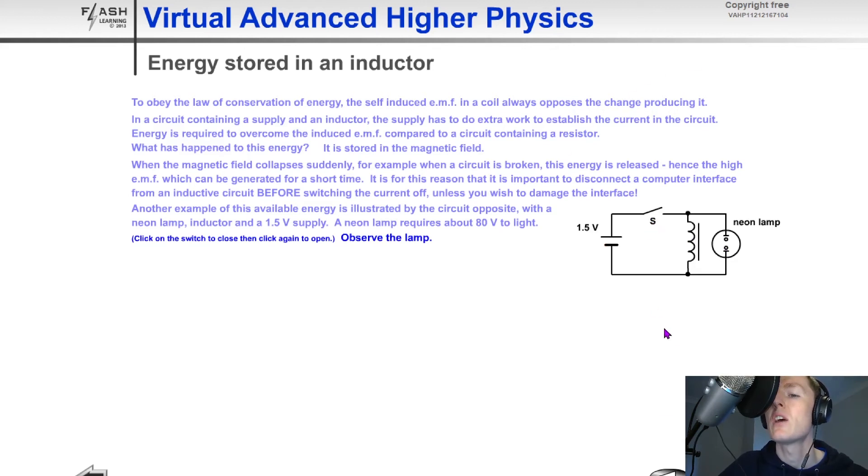So just to show you this, you'll see that we get a large flash there. So close the switch, nothing happens because there's not a high enough voltage to be across the neon lamp for it to light. But when we open the switch, there's a large flash from the neon lamp because the voltage across it is now high enough due to the large back EMF produced when the magnetic field collapsed due to opening the switch.